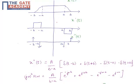Again, we will take the second derivative of the signal. The second derivative of the signal looks like this. There is an impulse at t equal to minus b, another negative impulse at t equal to minus a.